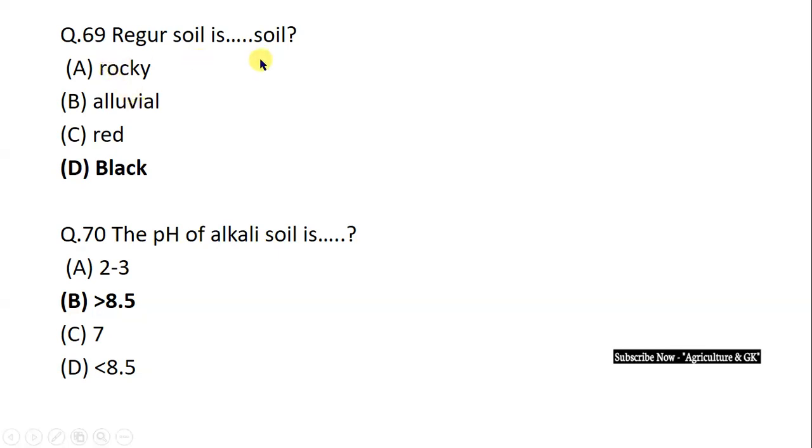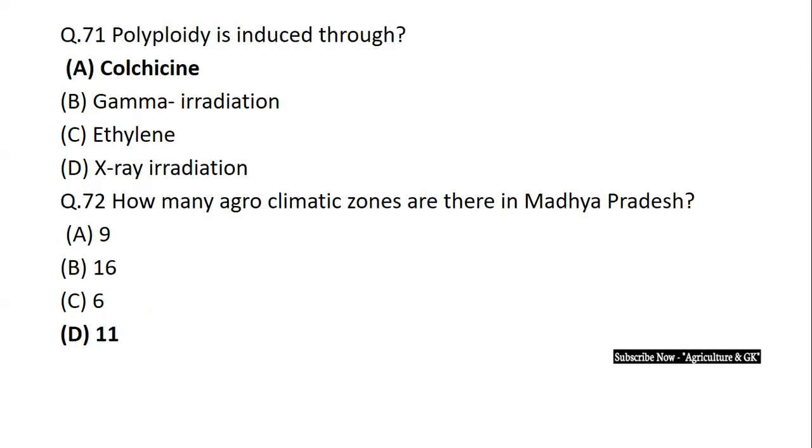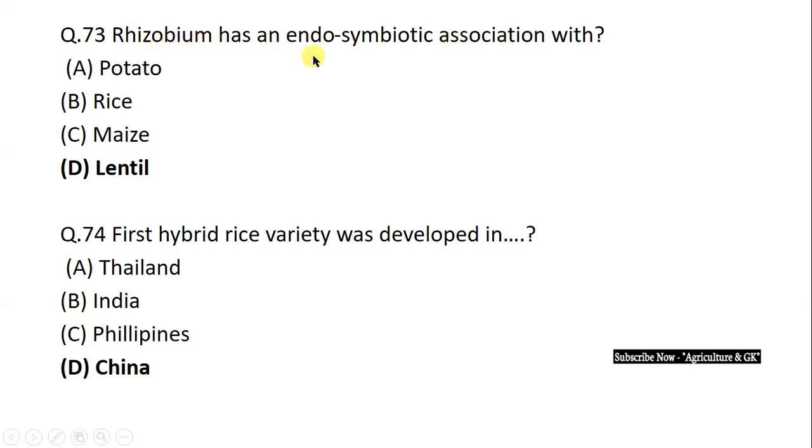Regur soil is black soil. The pH of alkali soil is greater than 8.5. Regur means soil with high clay content or organic matter. Polyploidy is induced through colchicine. There are 11 agro-climatic zones in Madhya Pradesh. Rhizobium has endosymbiotic association with lentil, not with potato, rice or maize as nodule formation doesn't occur in them. First hybrid rice variety was developed in China.